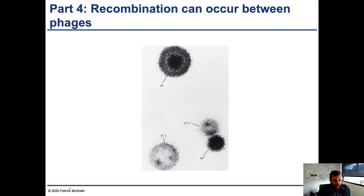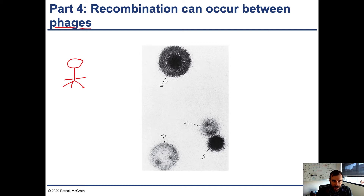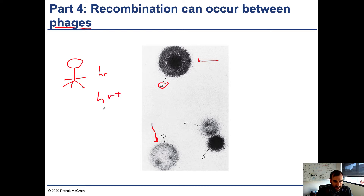Finally, we're going to describe how you can also have recombination between phages. Phages can have different genotypes as well. This is an example of four different strains of phages that have different genotypes and thus different phenotypes. You can see this one has alleles of the H and R gene, and as a result the plaques look something like this — a lighter plaque with the same large size, then a light small plaque, and then a dark small plaque.